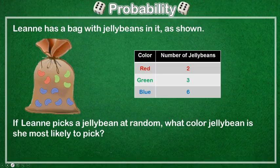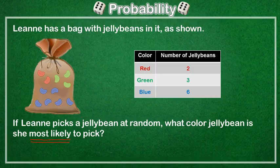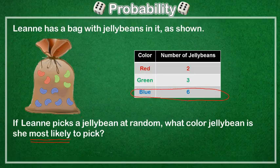Let's look at this problem. Leanne has a bag with jelly beans in it. We have 2 red, 3 green, and 6 blue. If Leanne picks a jelly bean at random, what color jelly bean is she most likely to pick? If we're looking for most likely, we want to see what color is in our bag the most. There are only 2 red, 3 green, but 6 blue. So that means she's most likely to pick blue.